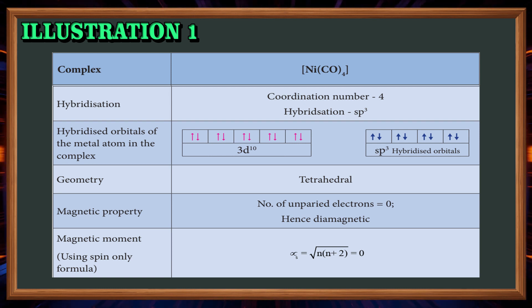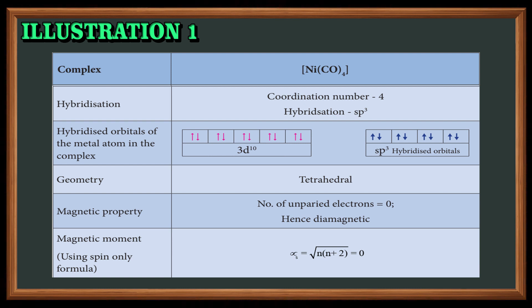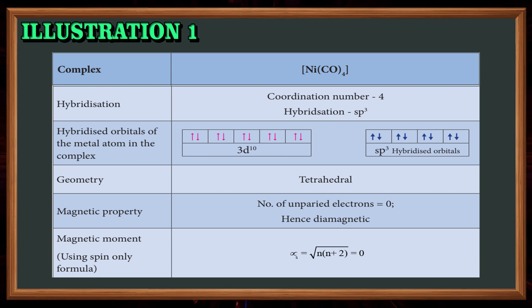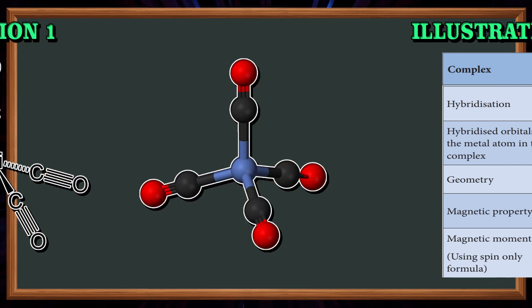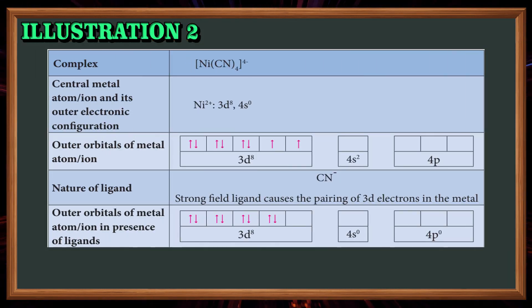The magnetic moment formula: μs = √(n(n+2)). With n = 0 (number of unpaired electrons), μs = 0.